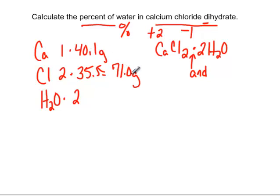So together, 40.1 and 71.0, that makes up our salt. But we also have some water in this compound because it's a hydrate.